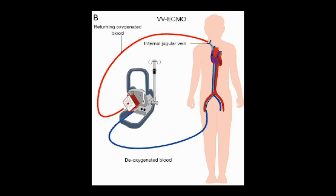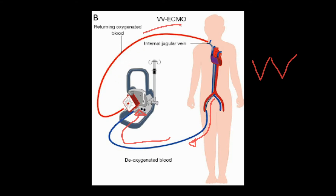Here is a patient who is on VV ECMO. In this configuration, the patient is cannulated with a femoral-internal jugular approach, where they have one of those large bore garden hose cannulas sitting in their right femoral vein. That blood is being pulled from the femoral vein into the pump-oxygenator-membrane system. After oxygen is added and carbon dioxide is removed, that blood is returned back to the patient, fully oxygenated, into their right internal jugular vein.